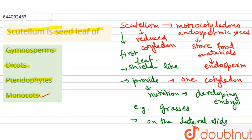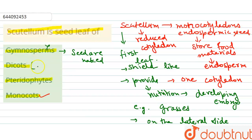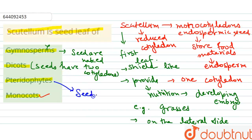Looking at the other options: in gymnosperms, seeds are naked. In dicots, seeds have two cotyledons. In pteridophytes, seeds are absent altogether. So the correct answer is option D — monocots.